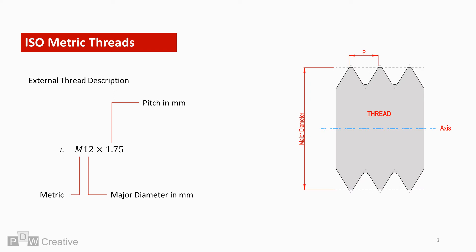Let's start with the thread description. General metric threads start with an M, denoting the thread is metric, followed by a number referring to the external thread major diameter. The last number references the pitch.